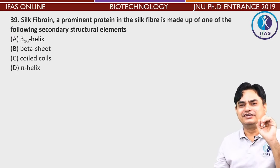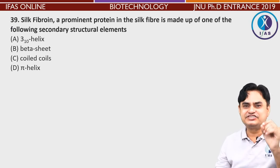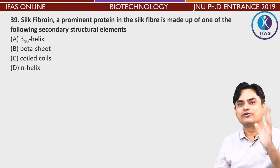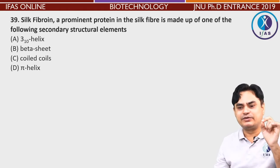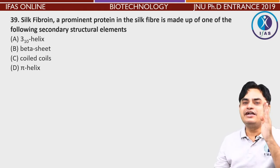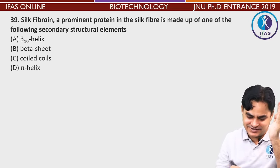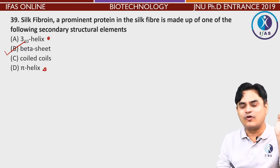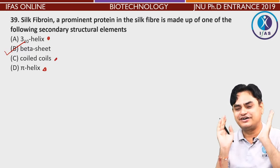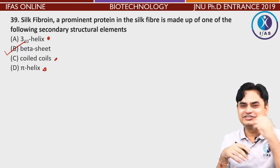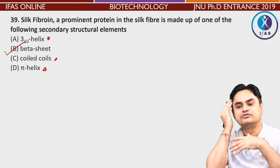Question 39 — which we studied in protein secondary structures in detail. The prominent protein in silk fiber is made up of which secondary structure element? The direct answer is anti-parallel beta sheets. Pi helix and 3-10 helix are very rare; coiled-coil is mainly present in dimers. So the answer is anti-parallel beta sheets.